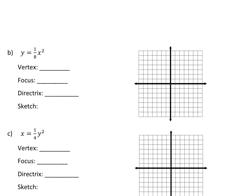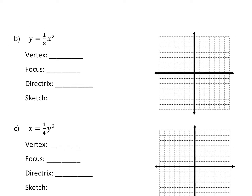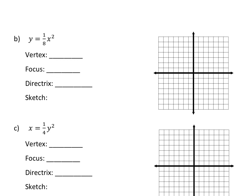The second one here — where is your vertex going to be? (0, 0). We have no plus H plus K, so the vertex is (0, 0). It's going to open up because of the positive one-eighth and because we have y equals. If it was x equals, it would open to the left or to the right. This is going to open up.